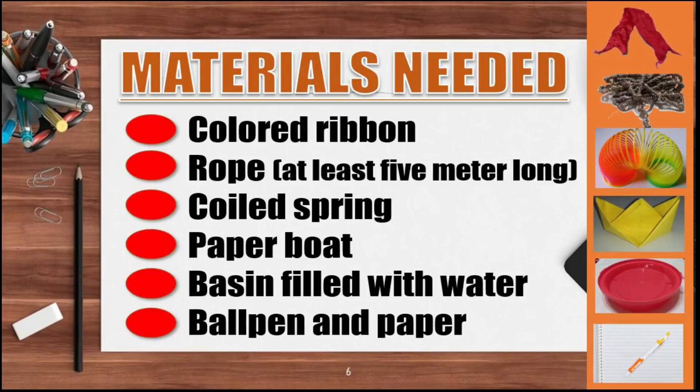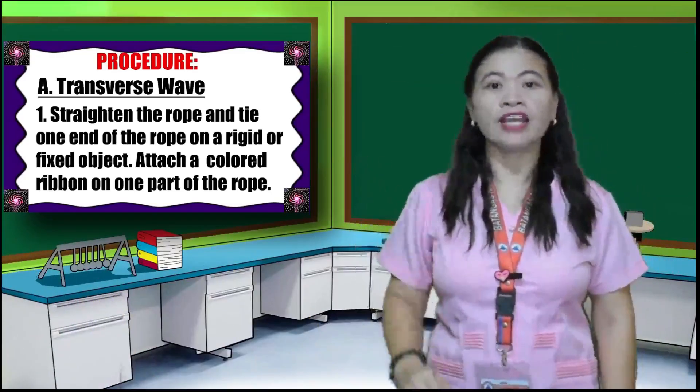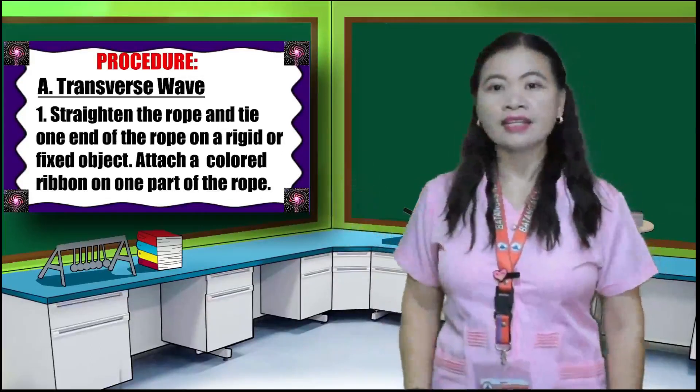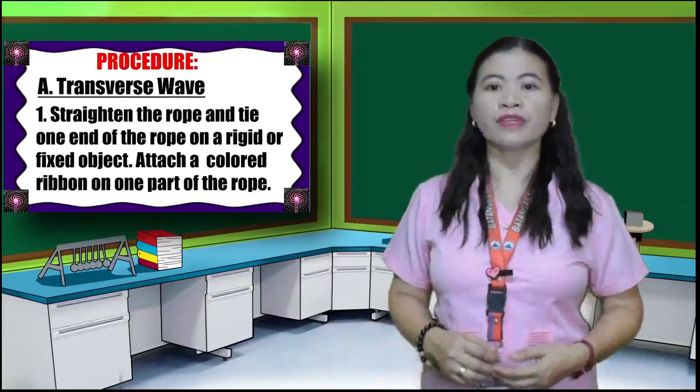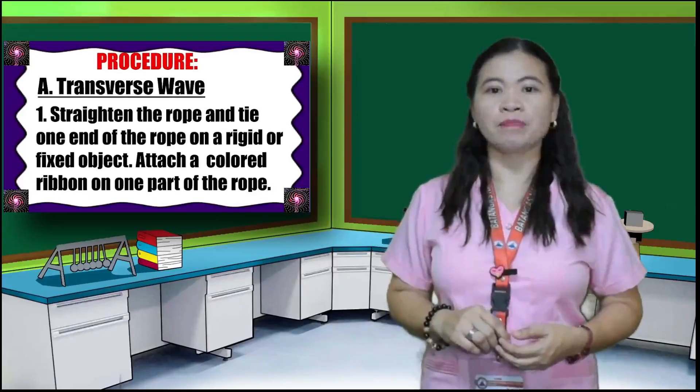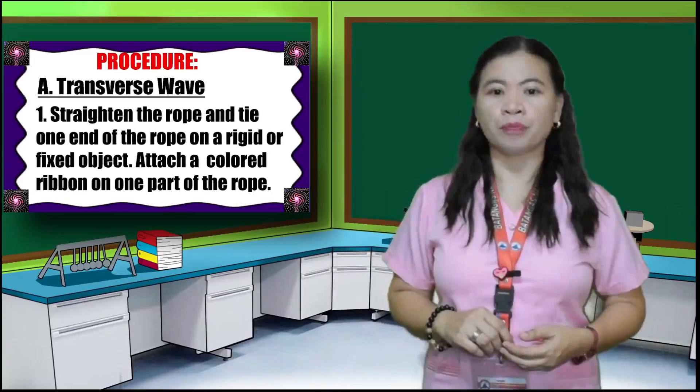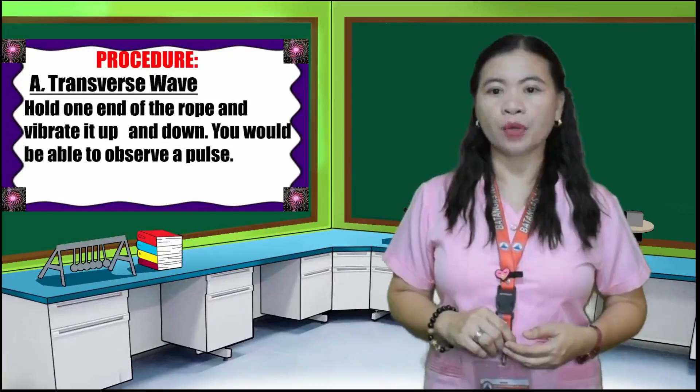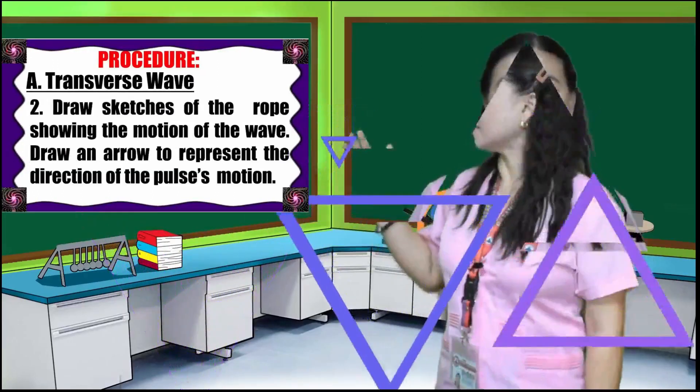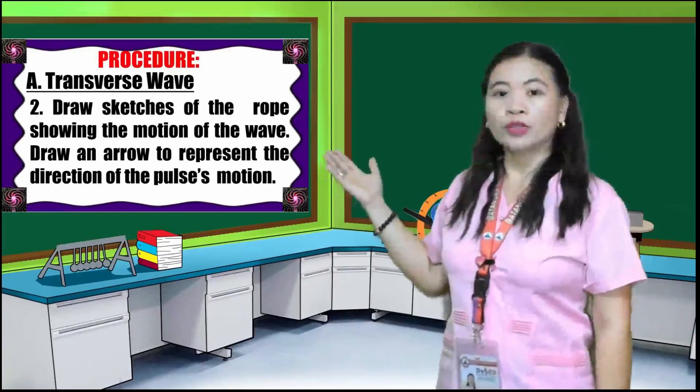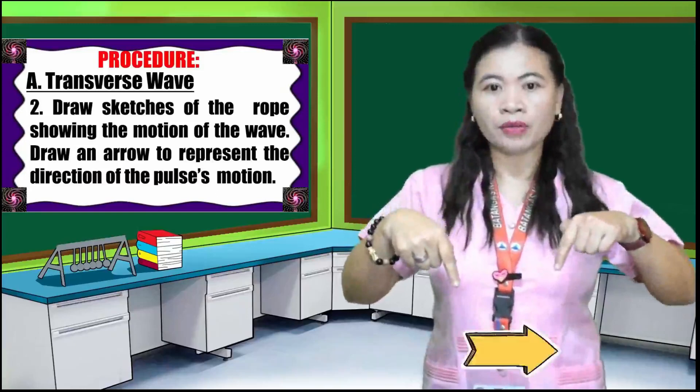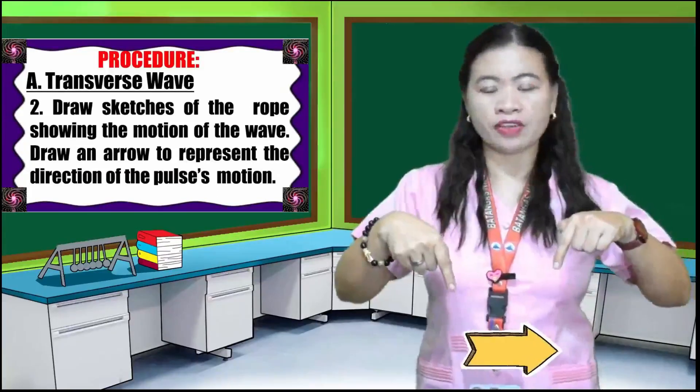For the procedures, letter A, transverse wave. Number one, straighten the rope and tie one end of the rope on a rigid or fixed object. Attach a colored ribbon or any small piece of cloth on one part of the rope. Hold one end of the rope and vibrate it up and down. You would be able to observe a pulse. Number two, draw sketches of the rope showing the motion of the wave. Draw an arrow to represent the directions of the pulse motion.